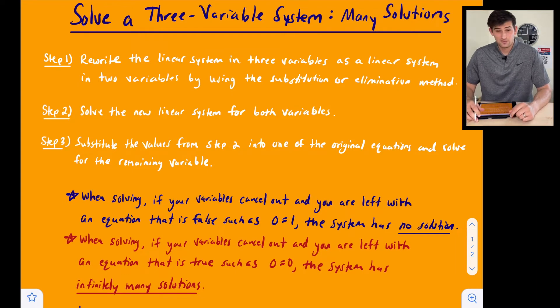Now in this video, we're talking specifically about infinitely many solutions. So let's look at this red sentence down here. When solving, if your variables cancel out and you are left with an equation that is true, such as zero equals zero, the system has infinitely many solutions.